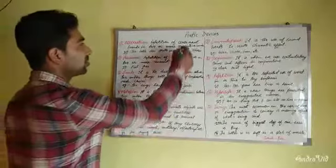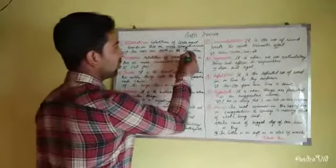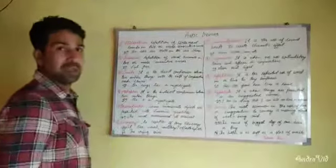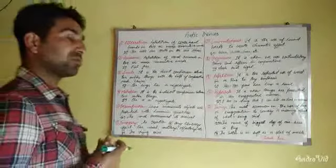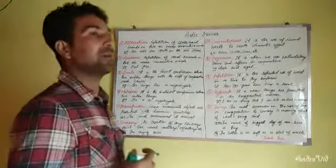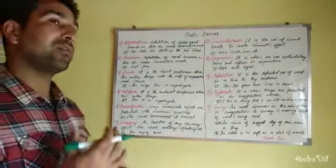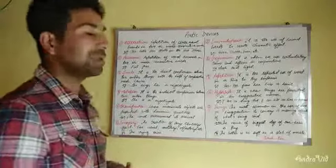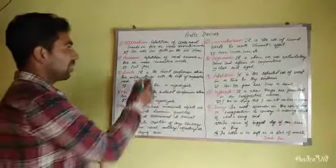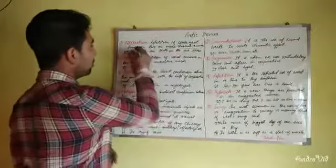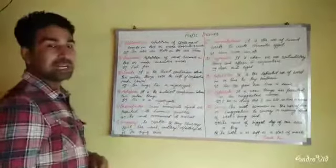Alliteration is the repetition of consonant sounds in two or more consecutive words. When consonant sounds are repeated — not vowel sounds, but consonant sounds — that is alliteration. For example: 'She sells seashells on the seashore' — the 'S' sound is being repeated, which is why it is alliteration.